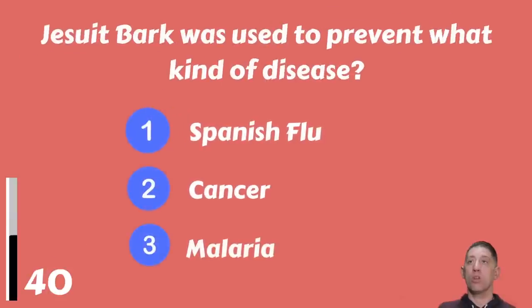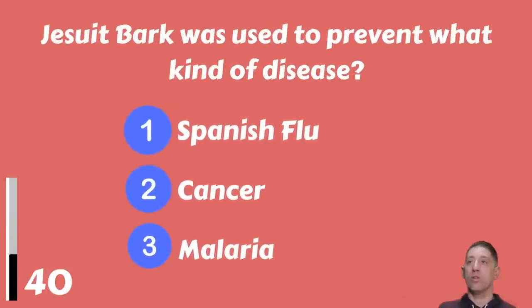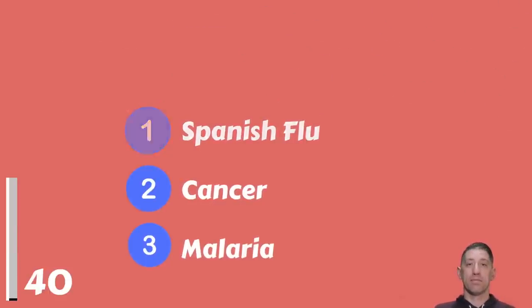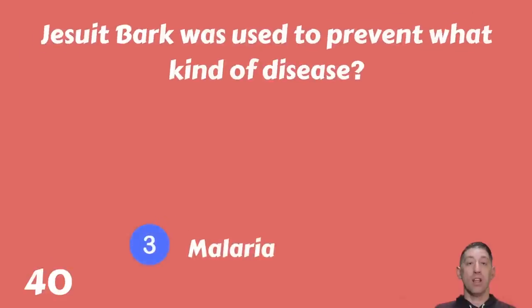Jesuit bark was used to prevent what kind of disease — Spanish flu, cancer, or malaria? The answer is malaria.